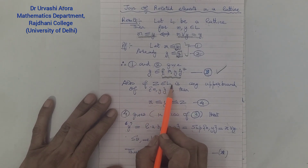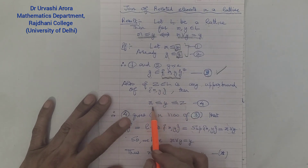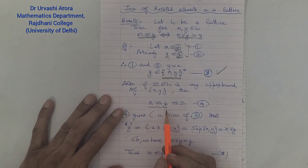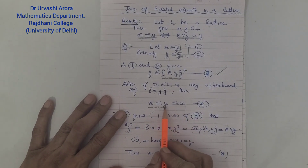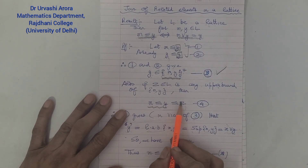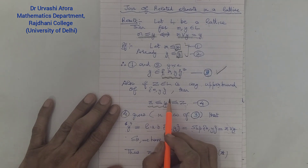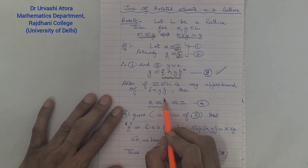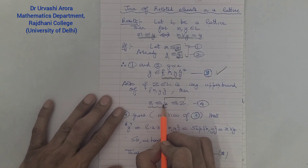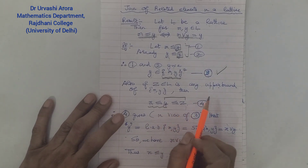Now let z, belonging to L, be any element which is an upper bound of x and y. We want to find where z is placed relative to x and y. We already know x ≤ y. Because z is an upper bound of both x and y, z has to be greater than both, so the only possibility is x ≤ y ≤ z. From this expression, marked as (4), z is greater than or equal to y.